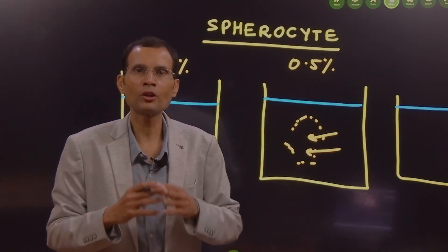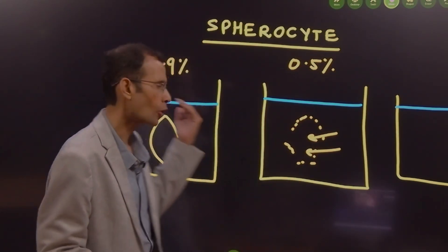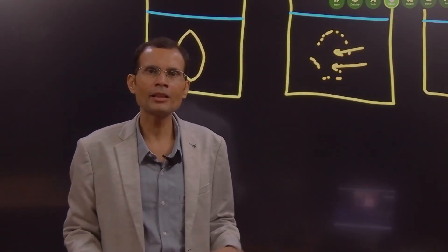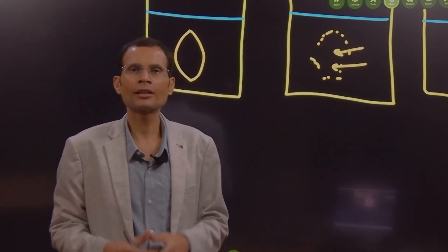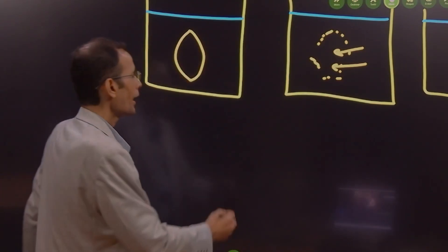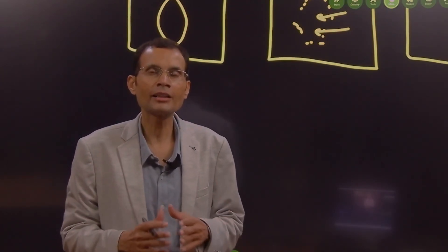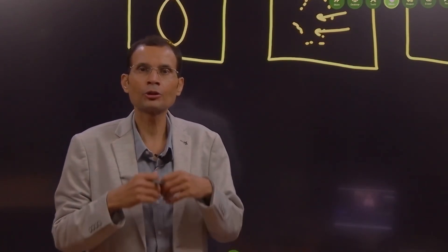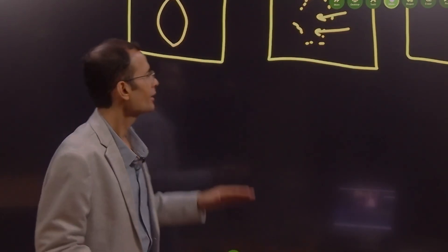Remember, osmotic fragility increases means the RBC breaks down earlier than normal. Is this used clinically? Yes — when sophisticated investigations are not available, this test can at least help diagnose changes in RBC shape. One last point: osmotic fragility decreases in sickle cell anemia, because a sickle-shaped RBC is more resistant to breakdown by osmotic movement of water. That was the reasoning question answered.